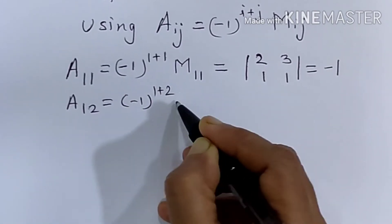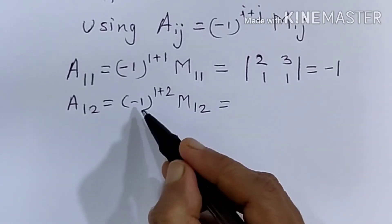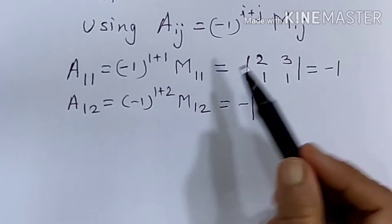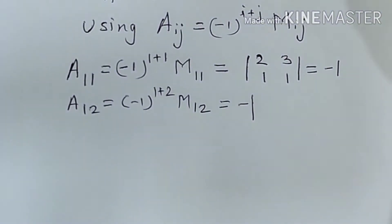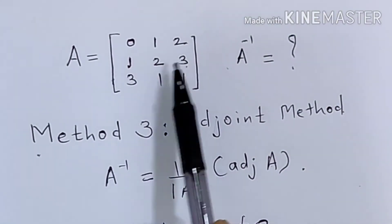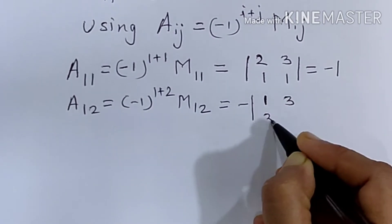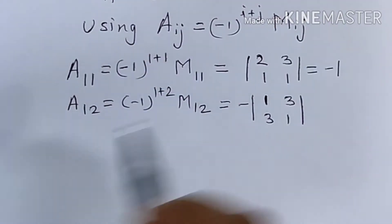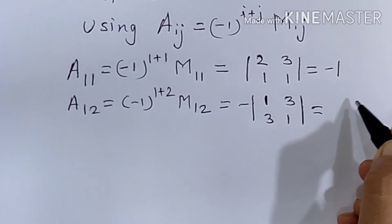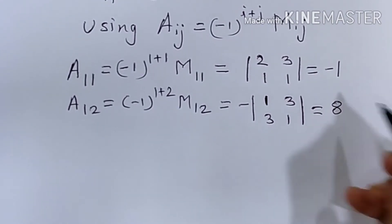Next, A12 is equal to minus 1 raised to 1 plus 2, into M12. The power is odd, so we get minus of the determinant. M12 means deleting the first row and second column, giving us the determinant with elements 1, 3, 3, 1. That equals 1 minus 9, which is minus 8. But with the outside minus sign: minus of minus 8 gives plus 8.